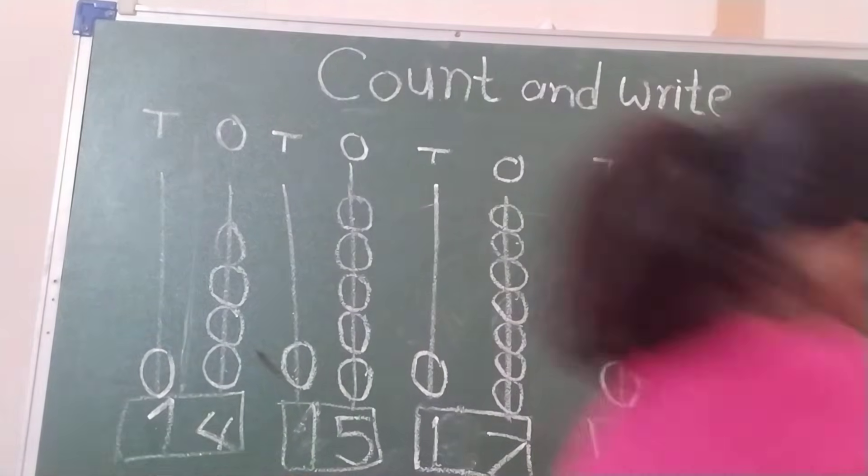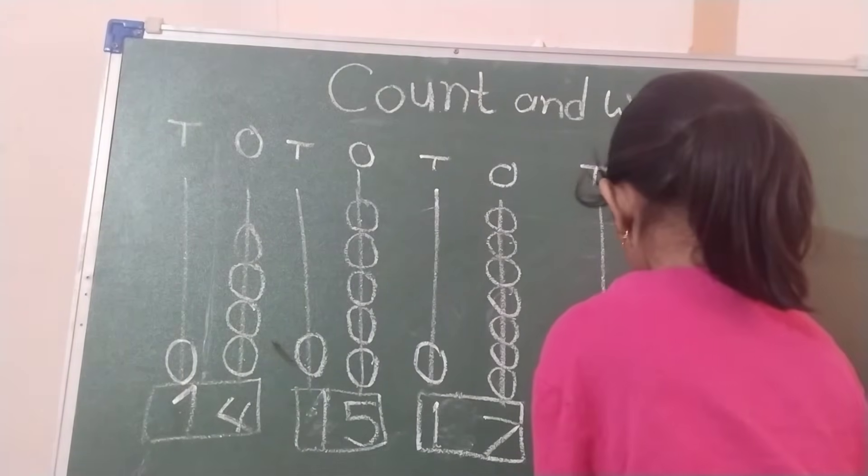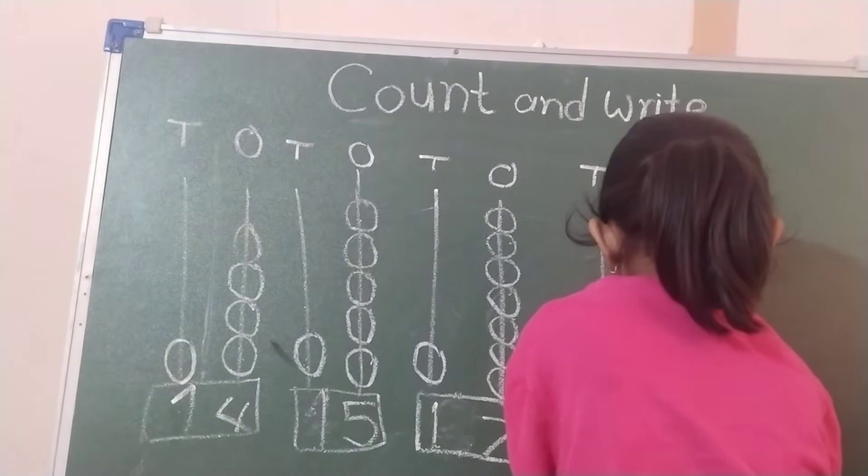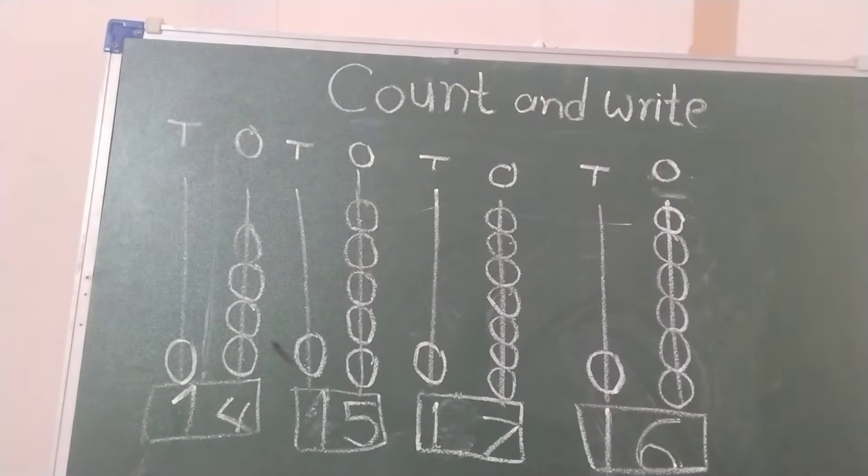Then next number. One, two, three, four, five, six. Then which number you got? One, two, three, four, five, six. Very good.